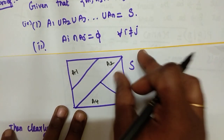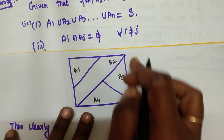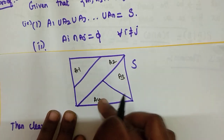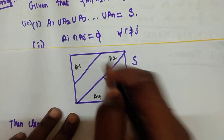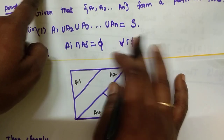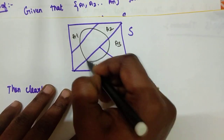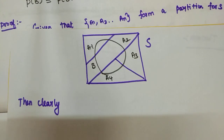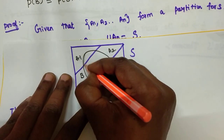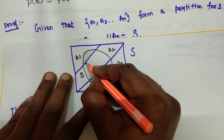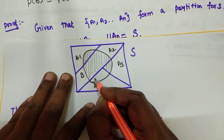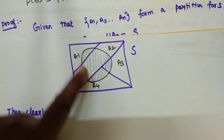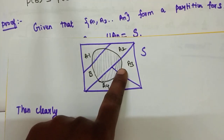This is a small example. There is a sample space. A1, A2, A3, A4 — there are 4 events in the partition. All events are disjoint, so this is a partition. Now let B be any event in S. Consider B intersection A1, B intersection A2, B intersection A3, B intersection A4.